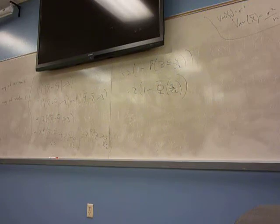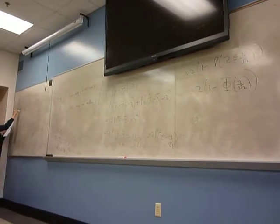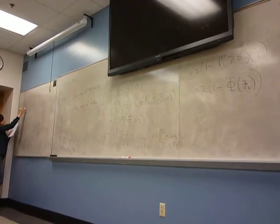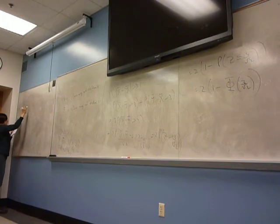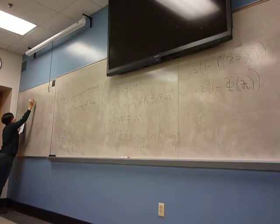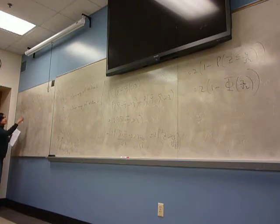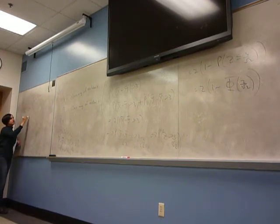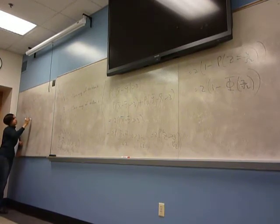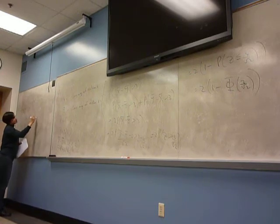It's really easy — you just recognize the form of the moment generating function. If you see a particular expression, just recognize it as the moment generating function of a known distribution, and identify the parameter lambda.